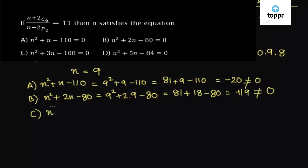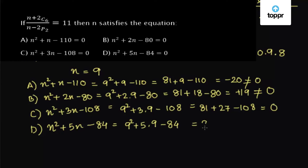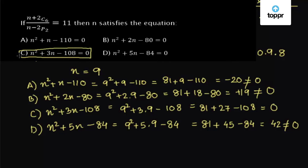For the third case, n²+3n-108=0: substituting n=9 gives 9²+3(9)-108 = 81+27-108 = 0. This equation is satisfied by n=9. Therefore, the answer is the third equation: n²+3n-108=0.